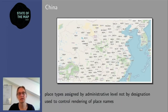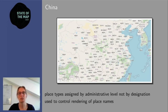Another problematic case is China. The Chinese community assigns place types not by what places look like but by what administrative entity they represent. They've invented the concept of a 'rural city,' meaning all counties are tagged as place=city. This completely breaks the algorithm. They do this because Chinese maps display county names and they wanted to replicate this in OSM. It may be possible to add an exception, but this is tagging for the renderer — which is questionable in OpenStreetMap.